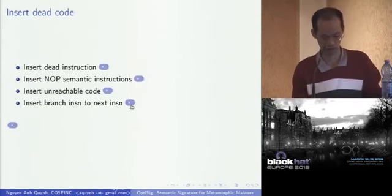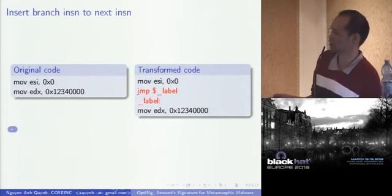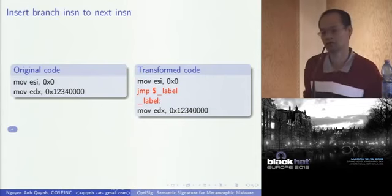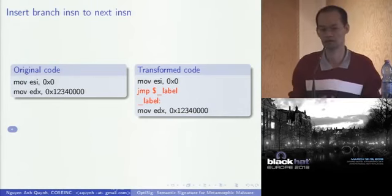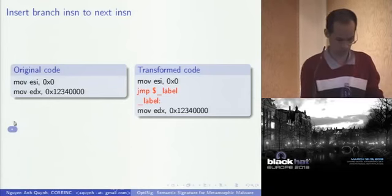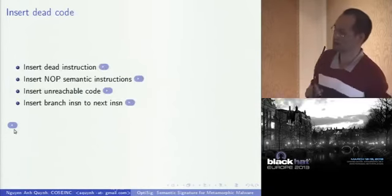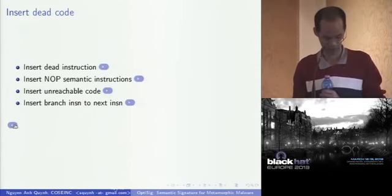The last sub-method is insert a branch instruction to the next instruction. You can see another transformation where a jump to the next instruction is inserted, which really does nothing, but the code looks very different. That is the first main method — insert dead code — a very effective transformation technique for metamorphic malware.